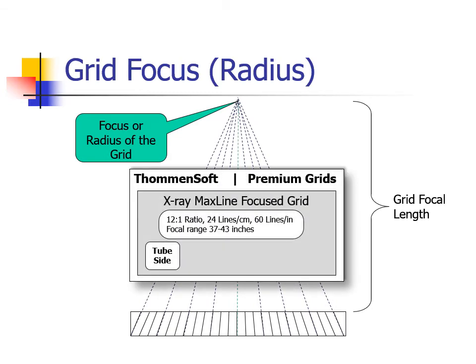Along with the center of the grid, most grids have a label designating the important characteristics of a grid. Here is a fictional company's information label. This is a 12 to 1, 60 line grid and can be used within a range of 37 to 43 inches to prevent cutoff artifacts. This grid would probably be used in a table bucky that includes a reciprocating mechanism due to its low frequency.